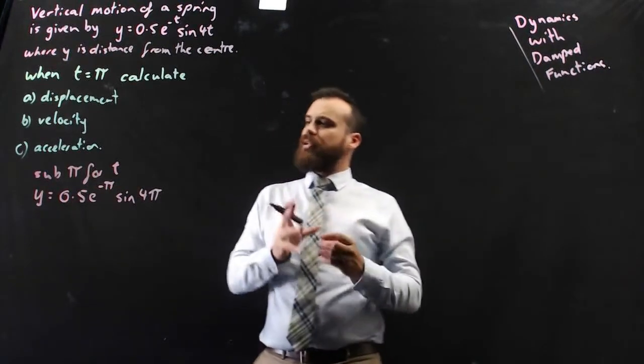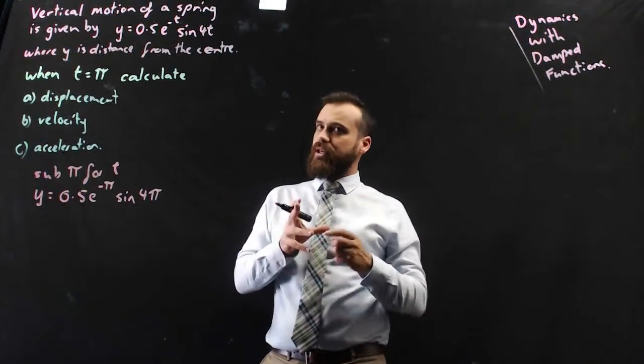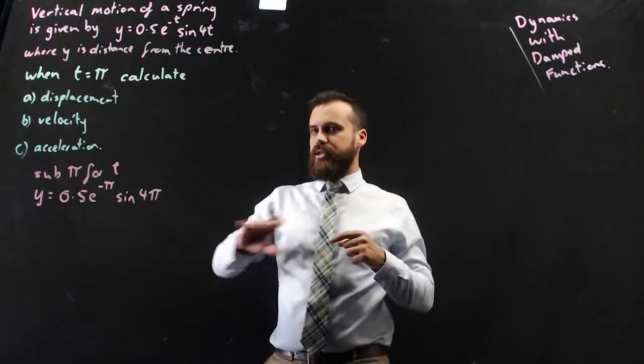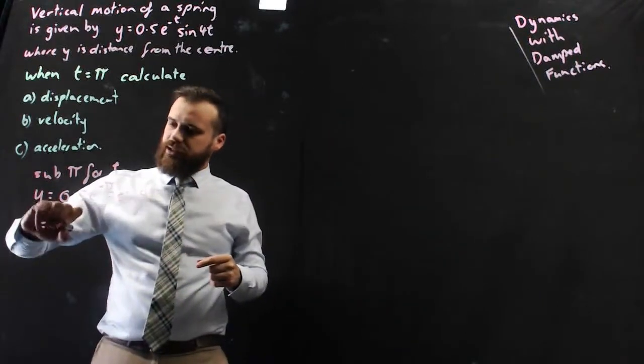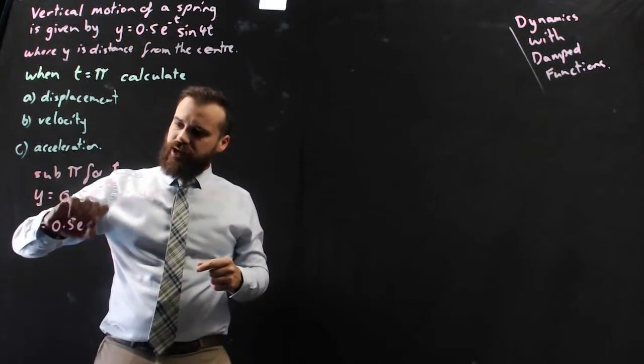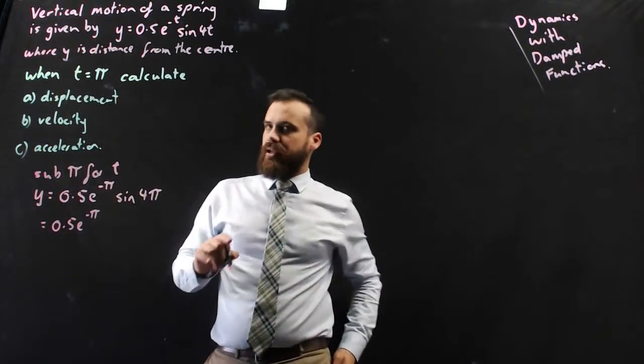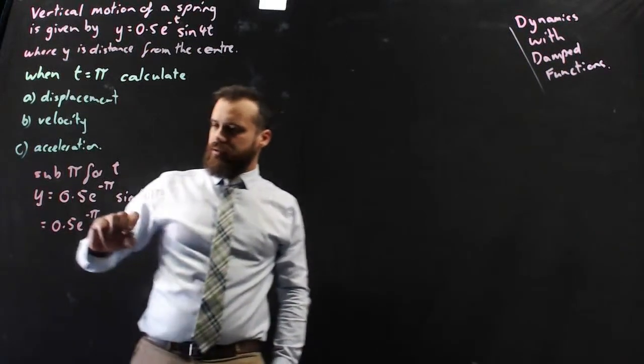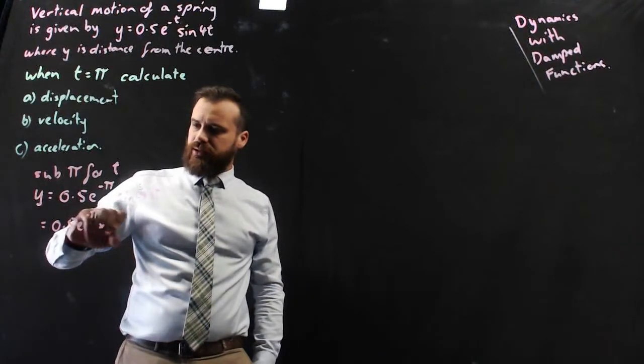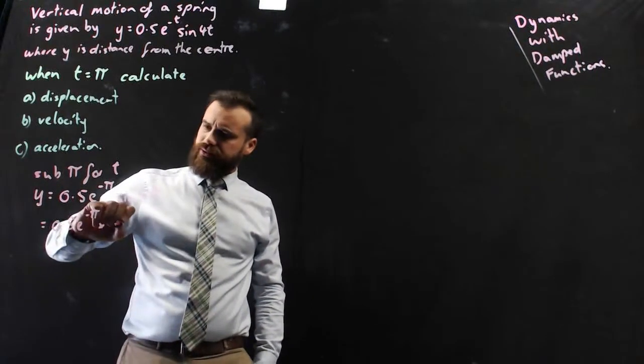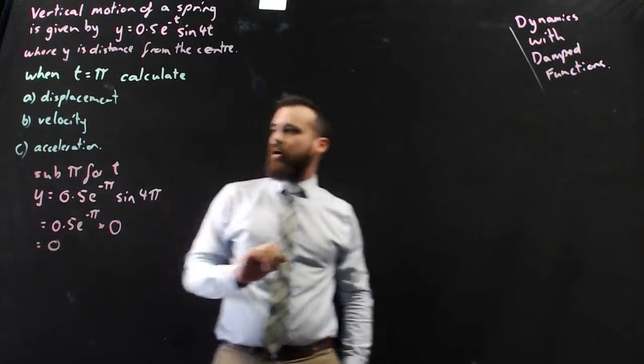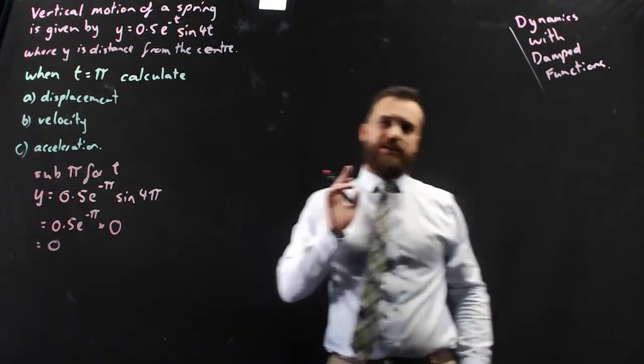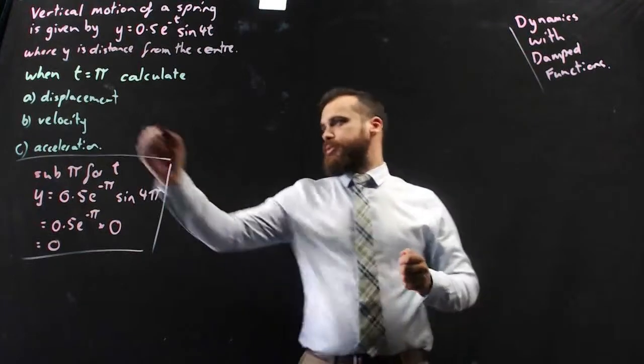So y equals 0.5e to the negative pi sine 4pi. Now don't be lazy here, you should be able to give an exact answer. There's no need for us to put this into our calculator and come up with a decimal answer. We can just say 0.5e to the negative pi, and sine 4pi is going to be 0. So the displacement at time pi is equal to 0.